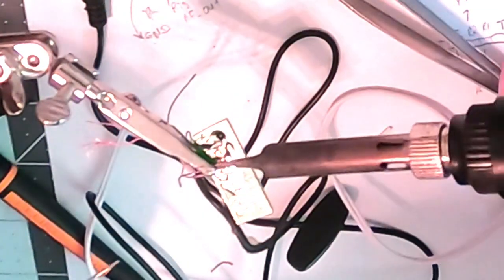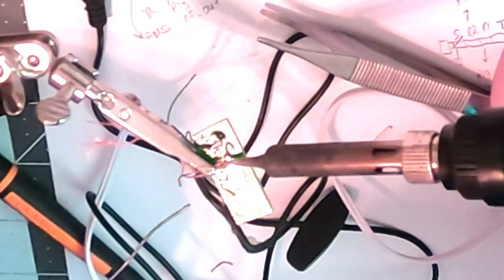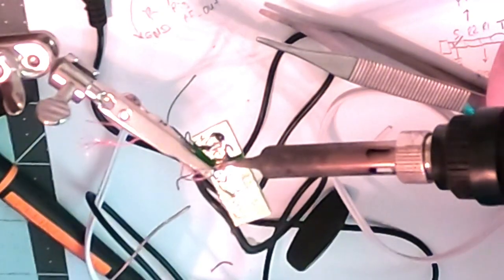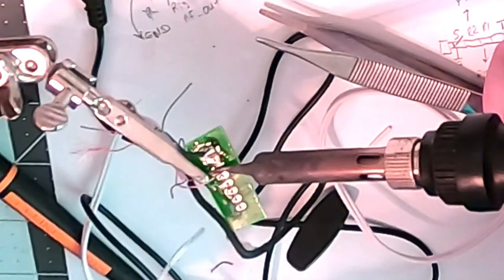Let's tin that up really nicely. Now you're going to see the flux boil off and hopefully some of the enamel too.